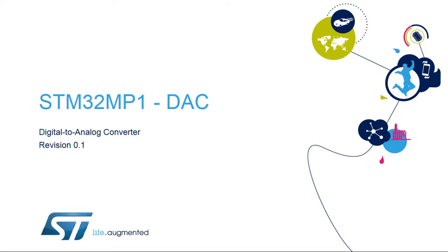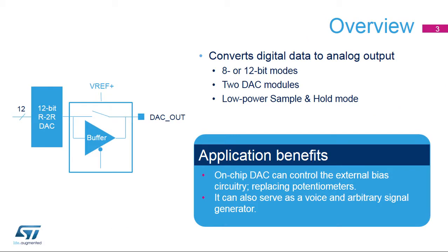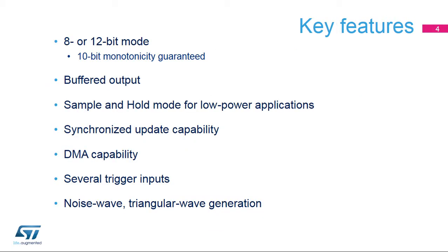Welcome to this presentation of the STM32-H7 Digital-to-Analog Converter. This block is used to convert digital signals to analog voltages, which can interface with the external world. The STM32-MP1 Digital-to-Analog Converter converts 8- or 12-bit digital data to an analog voltage. Two DAC modules are embedded in the STM32-MP1 microprocessor.